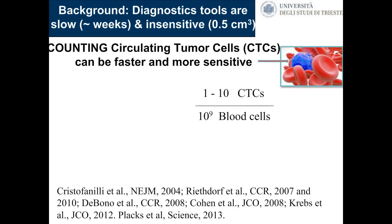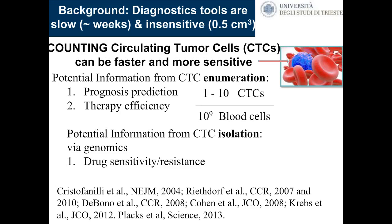Counting circulating tumor cells can be faster and more sensitive. These are very rare events — perhaps 10 to 20 tumor cells among 10 to the 9th blood cells. But if you are able to count them, you can obtain prognosis prediction, therapy efficiency assessment, and potential information from CTC isolation including peer genomics, and drug sensitivity and resistance data, which is very important.